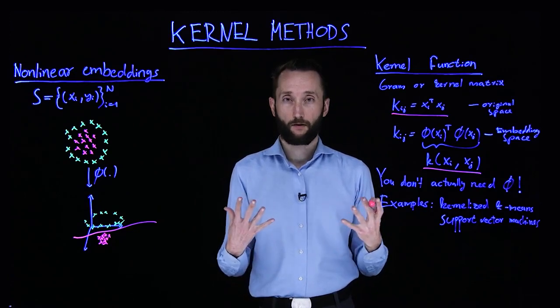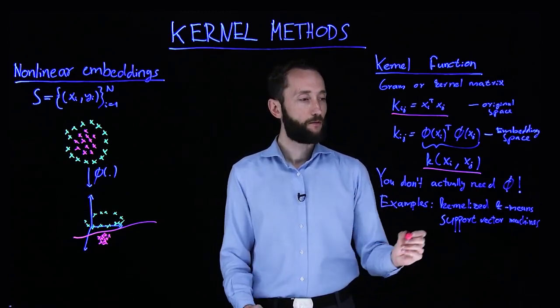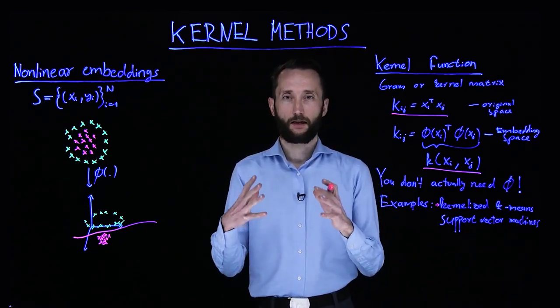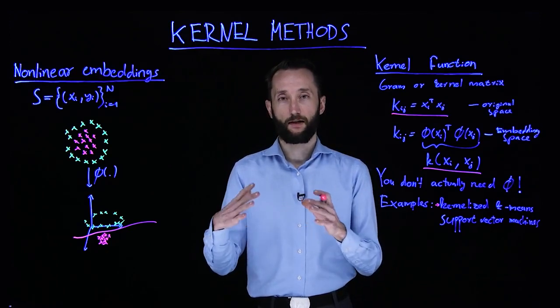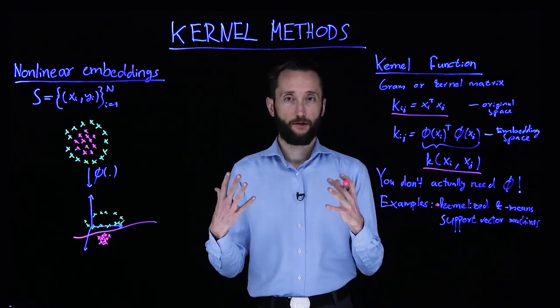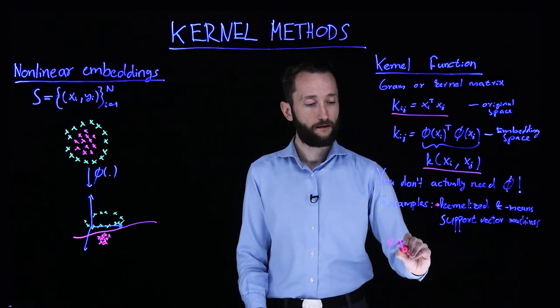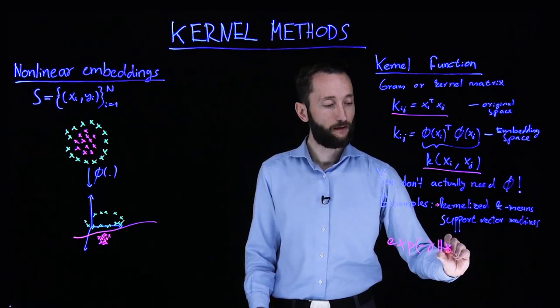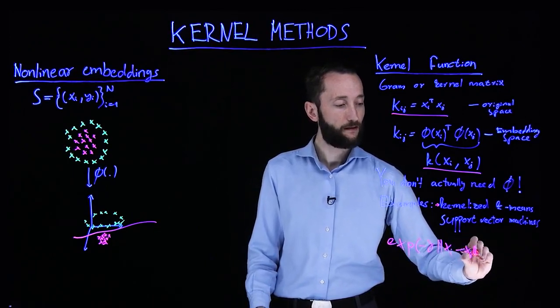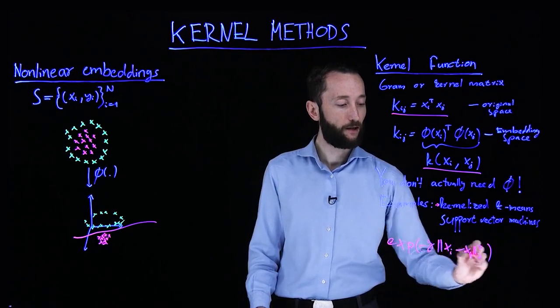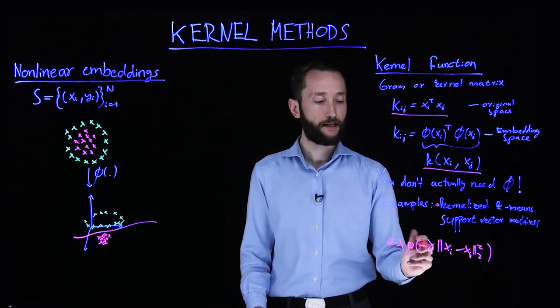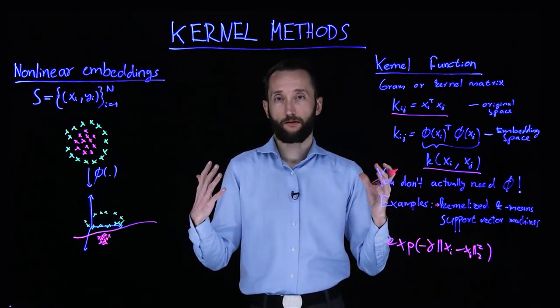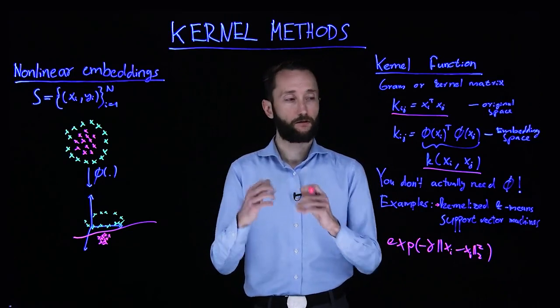So examples include kernelized k-means. So in this case, you have the k-means clustering that we discussed, but instead of the Euclidean distance, you can come up with new distance functions. For instance, you can create this exponential decay over the Euclidean distance. So here, inside, you have the Euclidean distance, but now it's inside an exponential that decays fast. So remote points would matter a lot less than things closer to the centroid of the k-means.